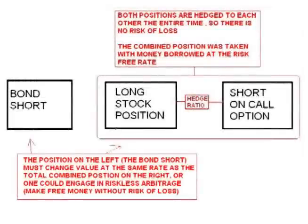Theoretically, if there are no commissions, one could continuously keep readjusting the stock position every time price moved throughout the entire life of the option, so that both positions are continuously balanced and all risk of losing money is removed. Therefore, if the portfolio does not increase at the risk-free rate, there is an arbitrage opportunity. If the total position increases more than the risk-free rate, I would make free money with no chance of loss. If it increased at a rate lower than the risk-free rate, I could reverse the positions — buy a call option and short the stock — and keep dynamically rebalancing to still make free money without any risk of loss.